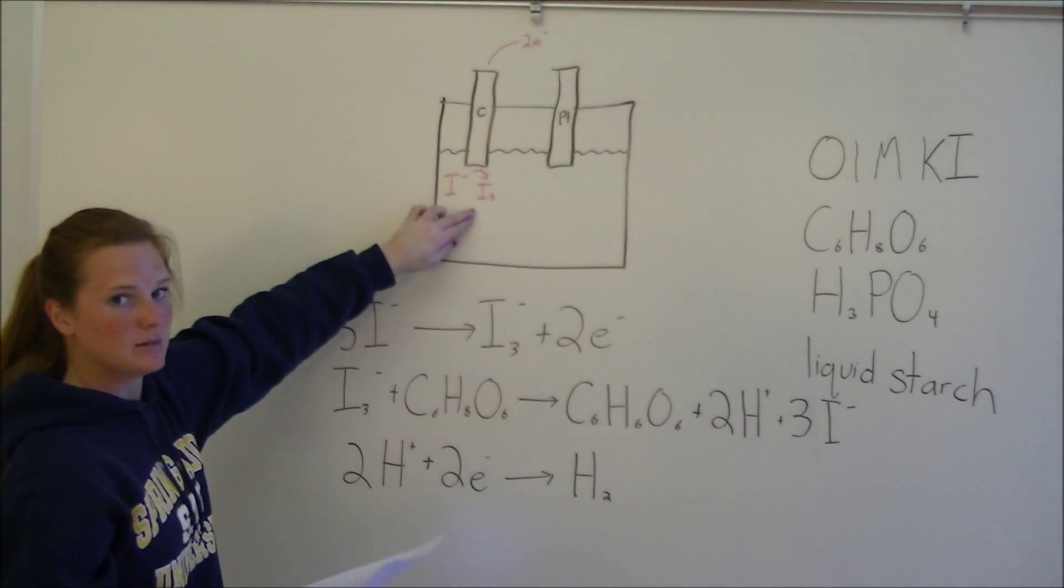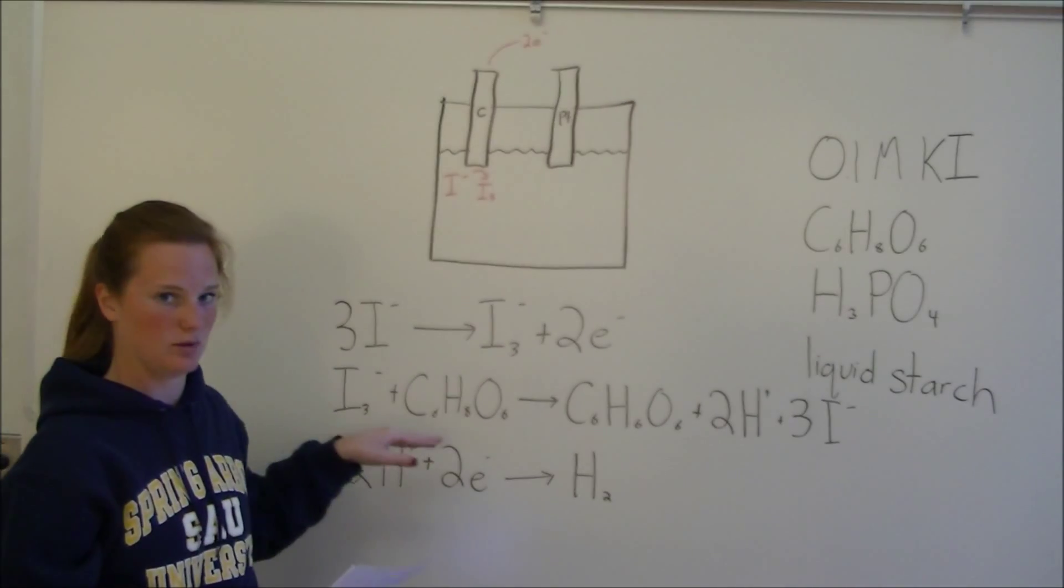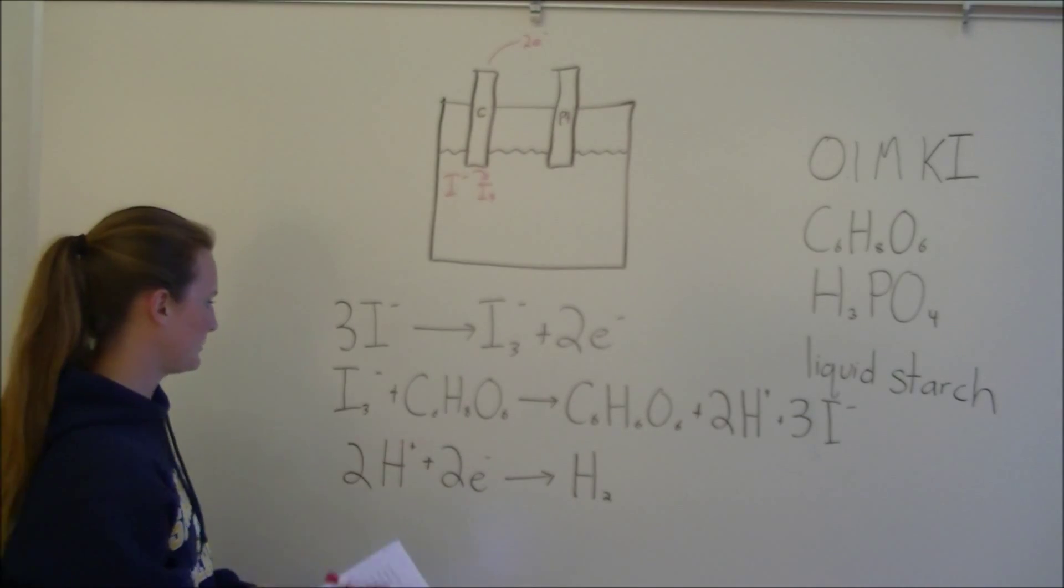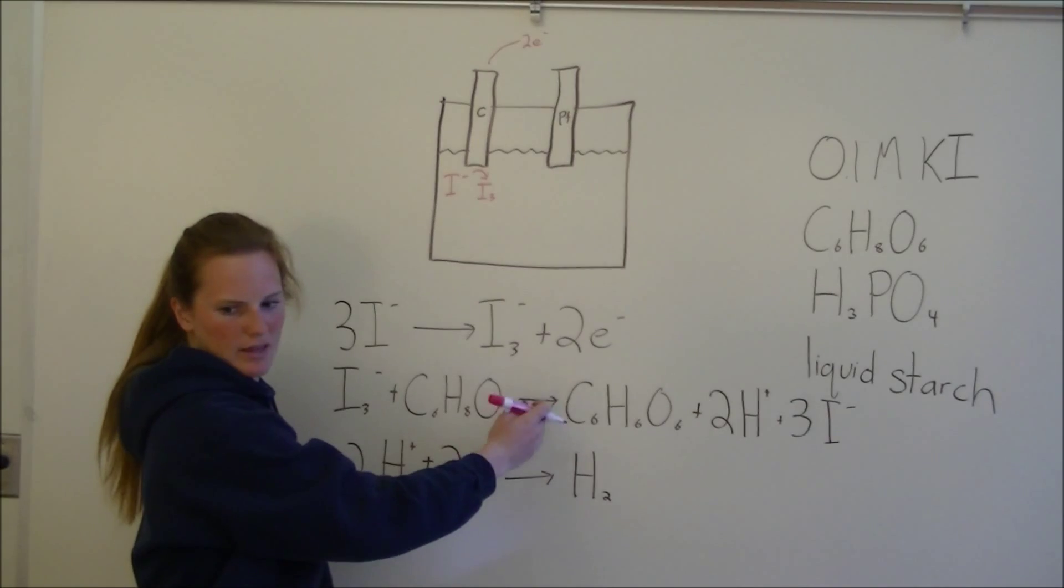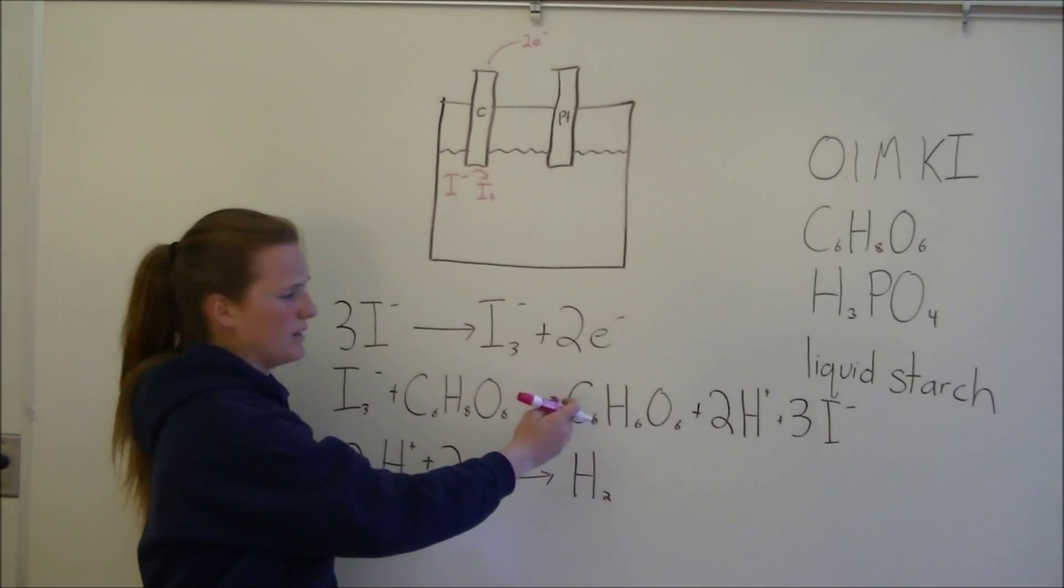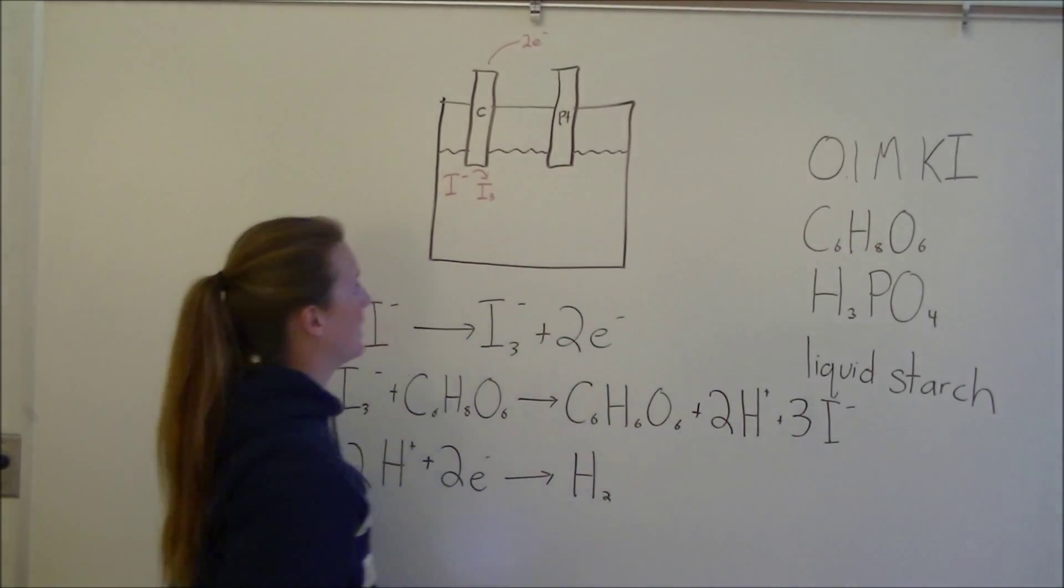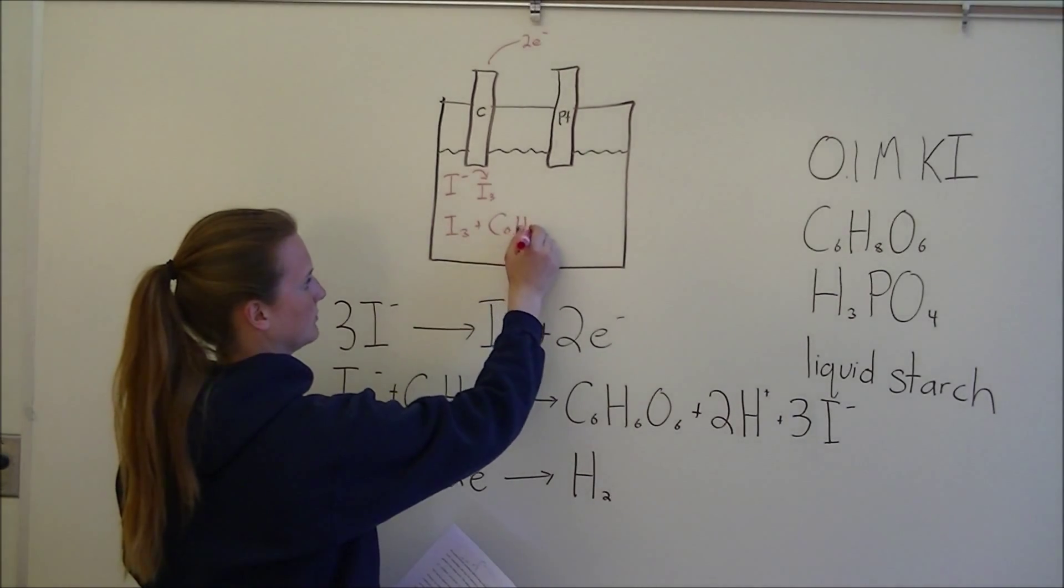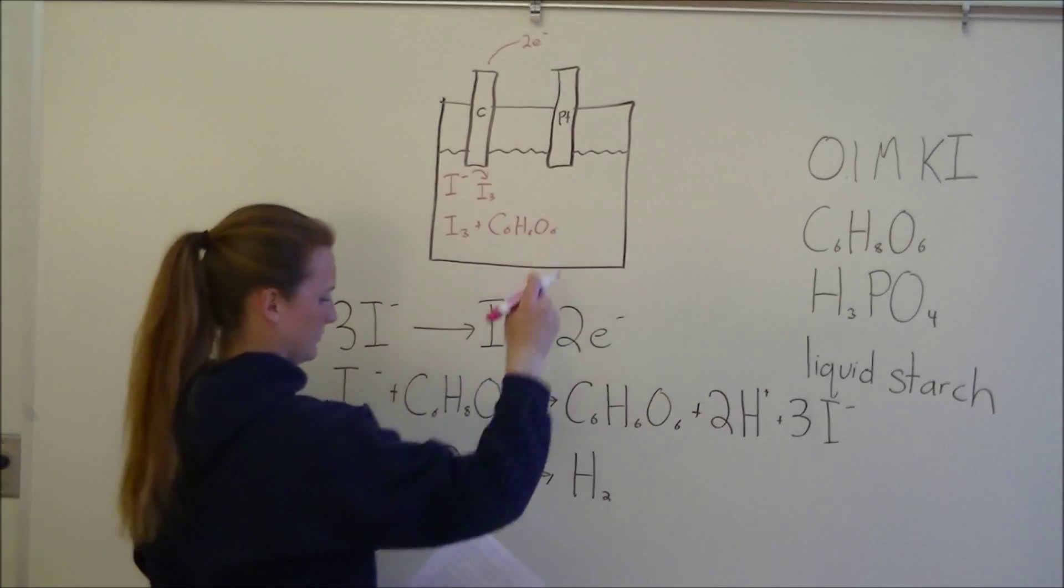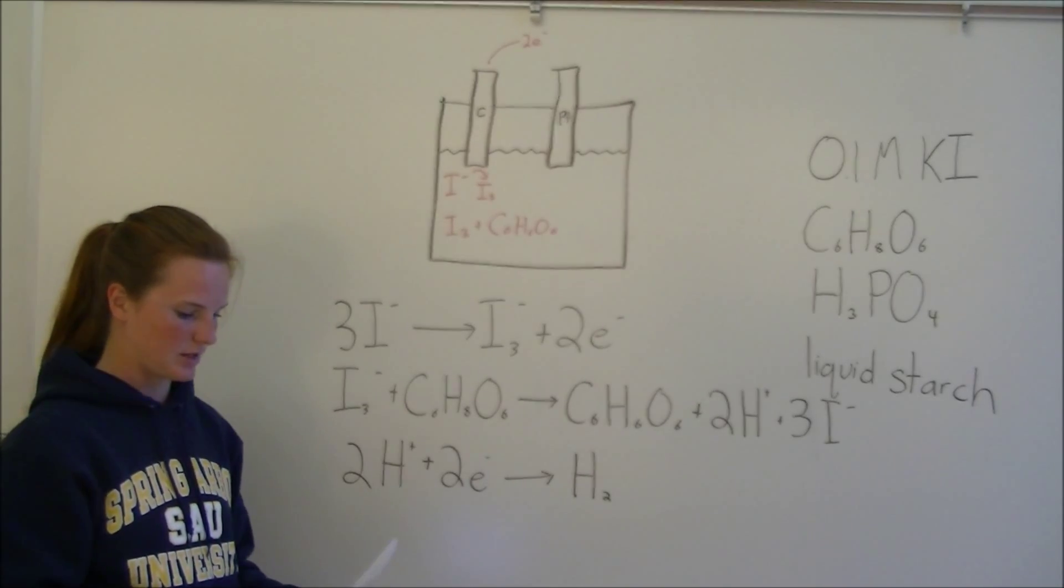Immediately after this iodine is produced, the iodine is going to react with the ascorbic acid in this whole equation. We have iodine plus ascorbic acid, and it's going to create dehydroascorbic acid plus protons plus iodide. This happens spontaneously. It doesn't need any current, it just goes.